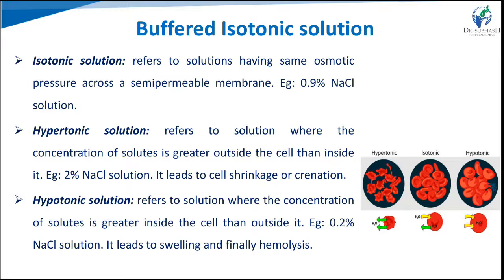A 0.9% weight by volume NaCl solution has essentially the same concentration and osmotic pressure as the contents of red blood cells (RBCs), so it is said to be isotonic with blood. It is also called physiological saline or normal saline. When RBCs are suspended in 0.9% NaCl, they undergo no changes in size or shape due to isotonicity, because the concentration and osmotic pressure in the RBC matches the solution. Note: 0.9% means 0.9 grams of NaCl in 100 mL of water.